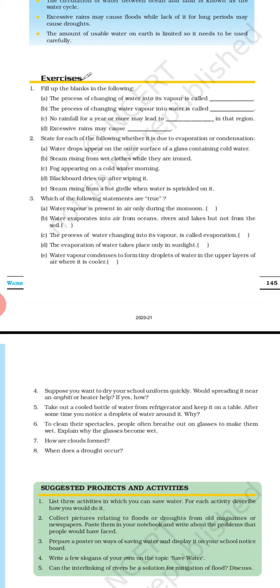Fifth question: take out a cooled bottle of water from the refrigerator and keep it on a table. After some time you notice droplets of water around it. Why? The droplets around the cooled bottle are due to condensation — the cold bottle meets the warm room air, causing condensation to start and water droplets to form.